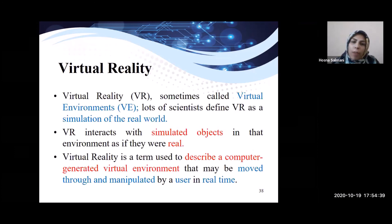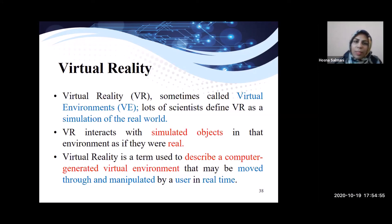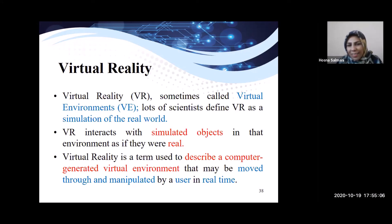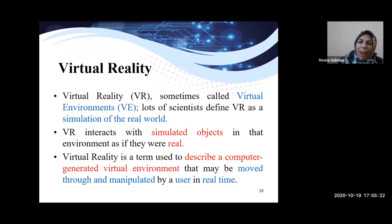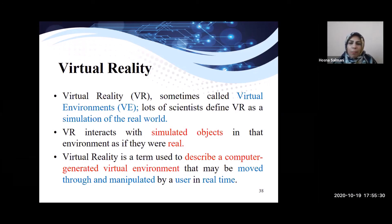Virtual reality is sometimes called a virtual environment. Scientists define VR as a simulation of the real world where users can interact with simulated objects as if they were real. When you put on a VR headset, you can simulate an imaginary world that feels real, as if you are in a real environment. VR is the term used to describe a computer-generated virtual environment that may be moved through and manipulated by a user in real time.